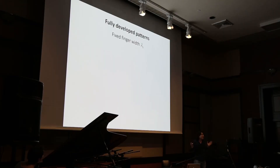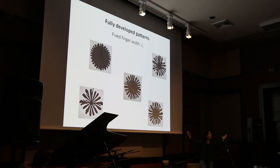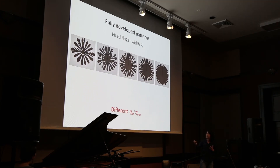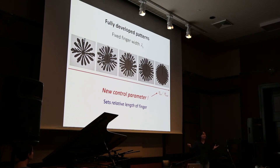We wanted to understand this, so we made our system even simpler — choosing fluids that all have the exact same finger width. But even doing that, we get a whole zoo of patterns. What we change is the viscosity ratio between the two fluids. We realized that the viscosity ratio is a very important control parameter for the global growth of these patterns — shifting from very long fingers to shorter and shorter fingers as the viscosity ratio increases. We have discovered a new control parameter that sets the relative length of the fingers and the displacement of the fluids.